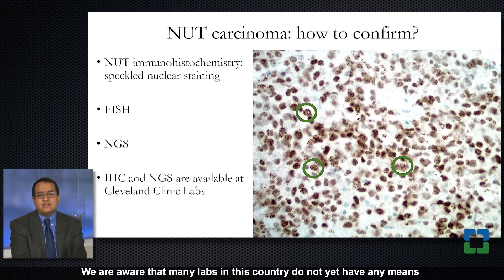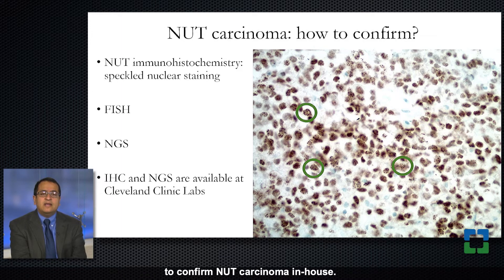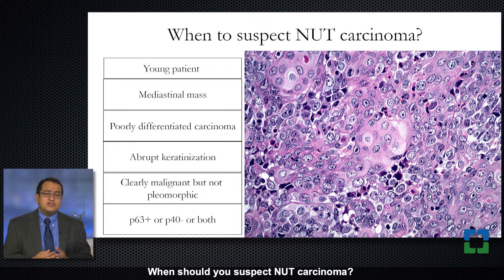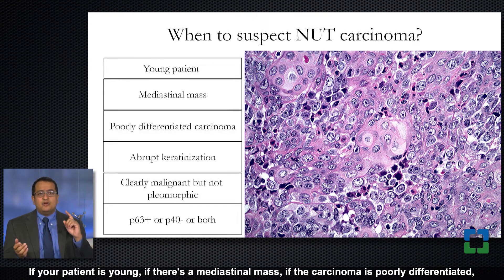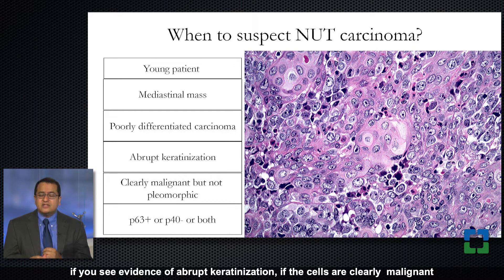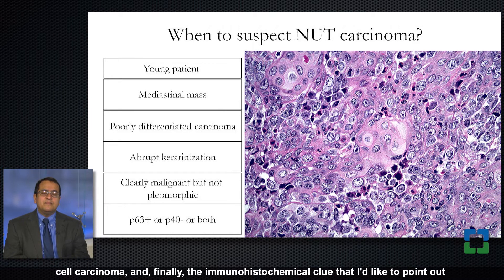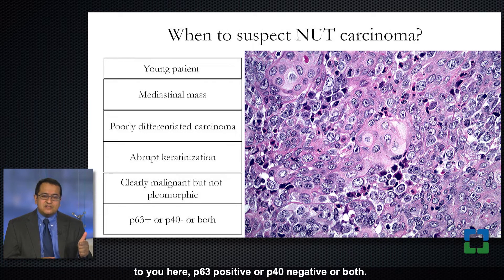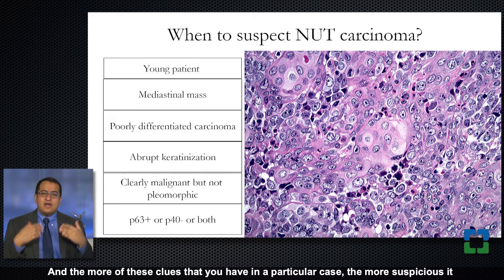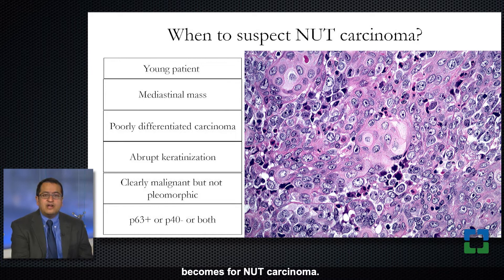Many labs in this country do not yet have any means to confirm NUT carcinoma in-house. When should you suspect NUT carcinoma? If your patient is young, if there's a mediastinal mass, if the carcinoma is poorly differentiated, if you see evidence of abrupt keratinization, if the cells are clearly malignant but don't show the degree of pleomorphism expected in non-small cell carcinoma — and finally, the immunohistochemical clue: p63 positive and/or p40 negative. The more of these clues present, the more suspicious it becomes for NUT carcinoma.